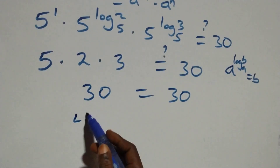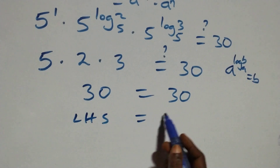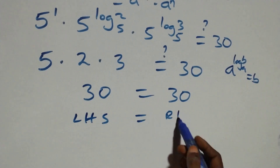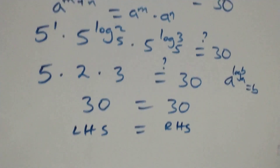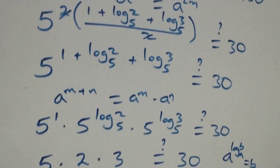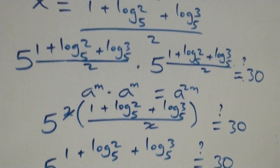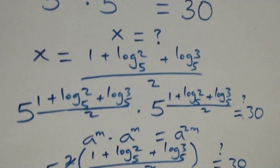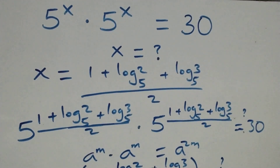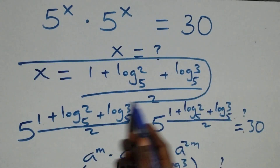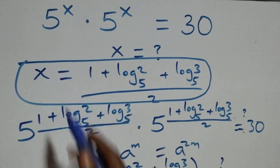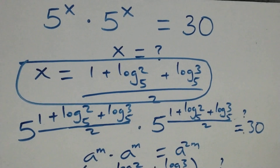The left hand side equals the right hand side. Therefore, we conclude that x equals (1 plus log₅2 plus log₅3) all over 2 satisfies the given problem. Thank you for watching.